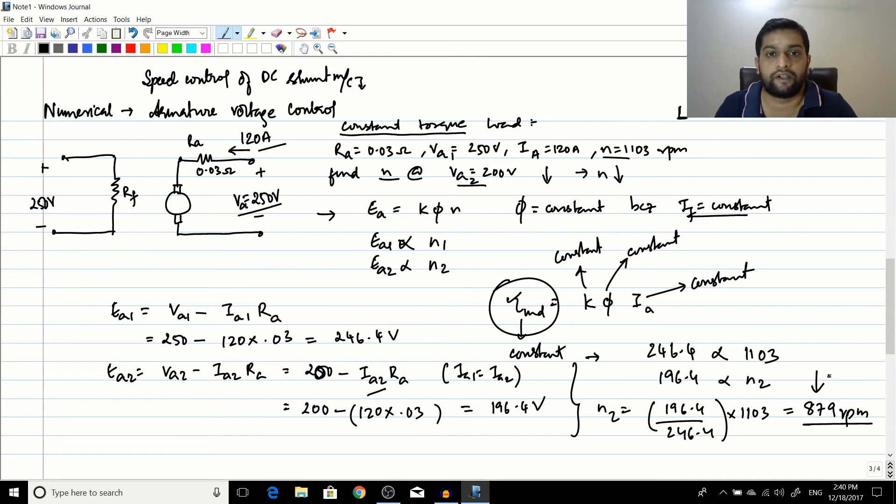So clearly the speed has come down - your answer is going in the right direction. I hope you have understood the theory between the RF control and the armature voltage control. In the next session, let us discuss what would happen if you open circuit the field current in a DC shunt machine and what are the bad consequences.